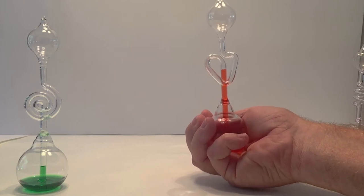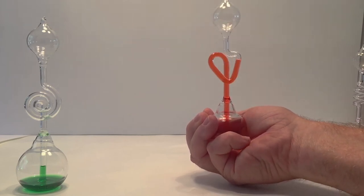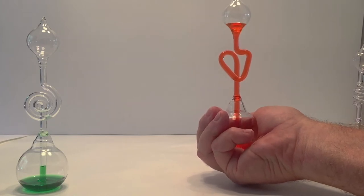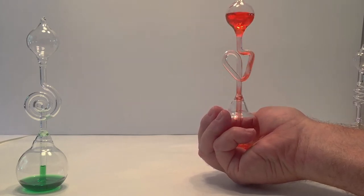The heat from your hand transfers to the liquid from the bottom of the boiler. This increases the temperature, causing the pressure inside the bulb to rise. As a result, the liquid moves to the top of the hand boiler bulb.